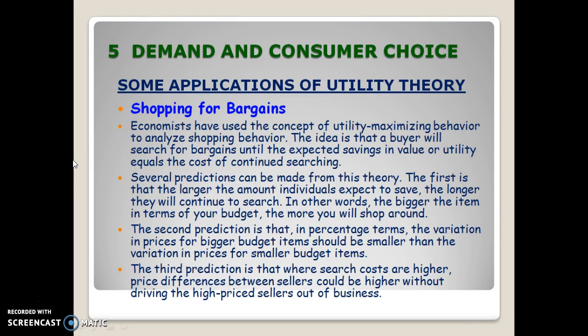Economists use the utility concept to analyze shopping behavior. A buyer will search for bargains until the savings or utility from searching is exhausted. Two predictions arise: first, the larger the amount individuals expect to save, the longer they'll continue to search — the bigger the item relative to your budget, the more you'll shop around. Second, there's variation in prices within your budget, which is difficult to predict and requires many market projections.